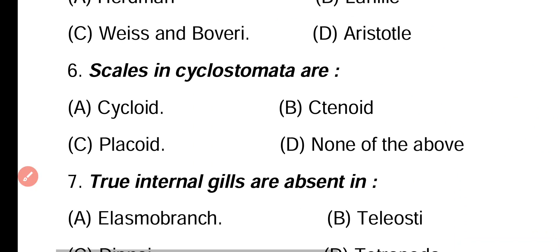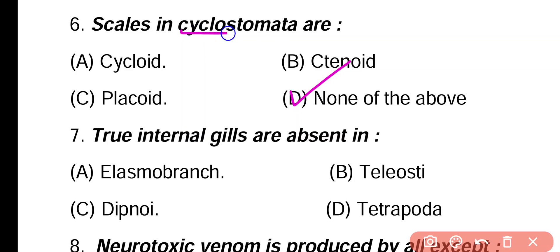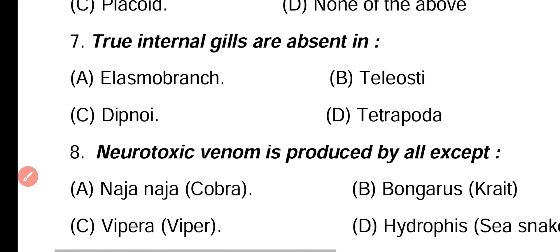Question 6. Scales in Cyclostomata are: cycloid type, tenoid type, placoid type, none of the above. Correct answer is option D. Cyclostomata is a class in which scales are absent, so the correct answer is none of the above.